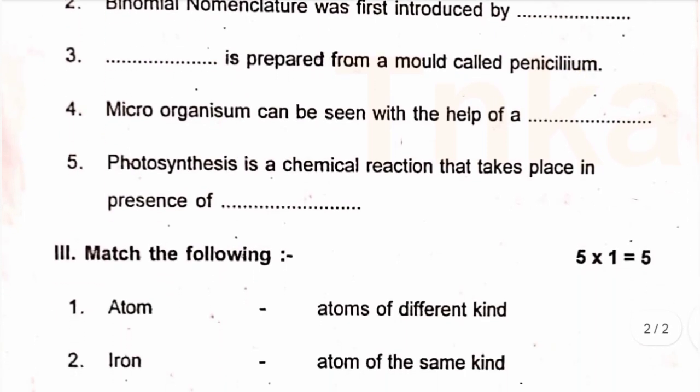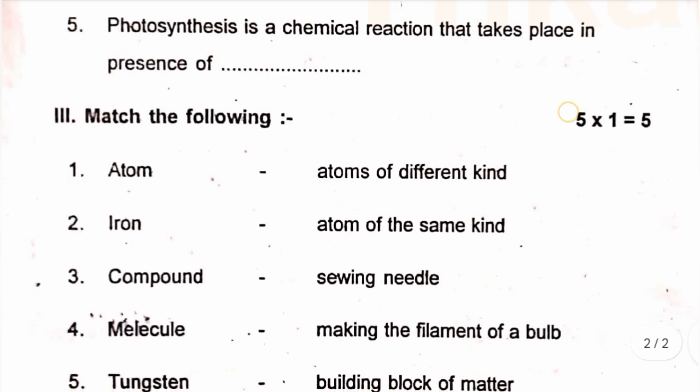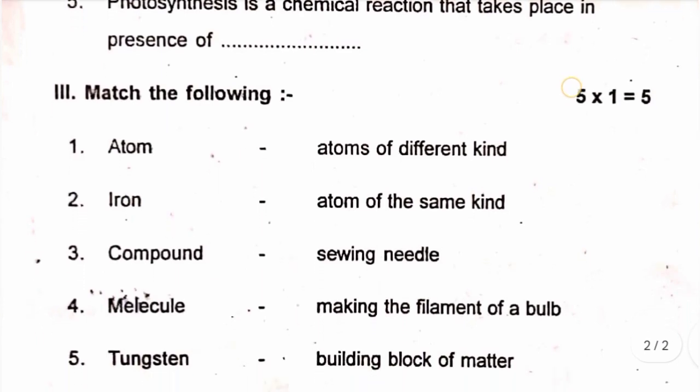Roman number 3: match the following. Left side: Atom, Iron, Compound, Molecule, Tungsten. Right side: atoms of different kind, atom of the same kind, sewing needle, making the filament of a bulb, building block of matter. Match the correct options.